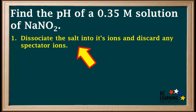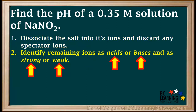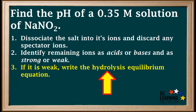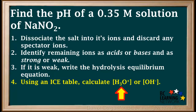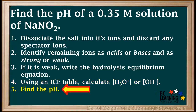A general approach to finding the pH of a salt solution is outlined here. We start by dissociating the salt into its individual ions and discarding any spectator ions. Next, we look at the remaining ion or ions and identify them as acids or bases and as strong or weak, using their location on the acid table. If the ion acts as a weak acid or base, we write its equilibrium equation for hydrolysis — the ion's reaction with water. If it's a weak acid, we use an ICE table and its Ka expression to calculate the hydronium ion concentration, and if it's a weak base, we use an ICE table and its Kb expression to calculate the hydroxide ion concentration. Finally, we convert hydronium or hydroxide concentration to pH.